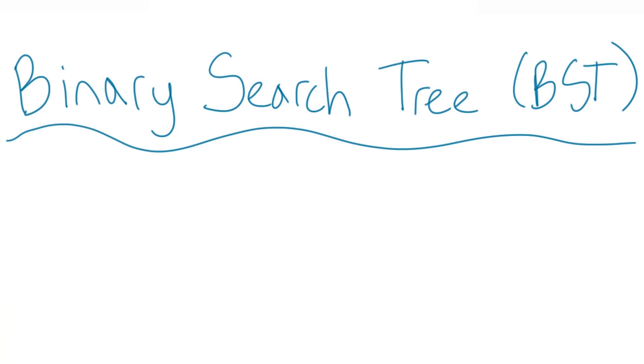There's a more specific type of binary tree called a binary search tree. A binary search tree, or BST, is definitely a binary tree. That is, every parent node has at most two children. But just as an array is a type of list, a BST is just a type of binary tree.